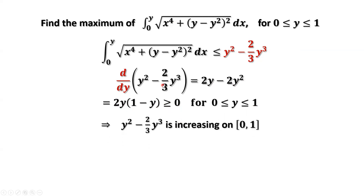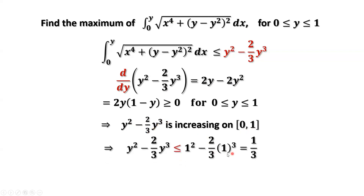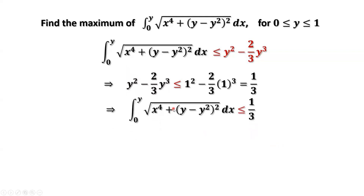What does this mean? The first-order derivative of this function is ≥ 0 on this interval. Therefore, the function y² − (2/3)y³ is increasing on this interval. The maximum value of this function is at the right endpoint, which is y = 1. Substituting y = 1, we get the maximum value: 1 − 2/3 = 1/3. In summary, this integral is less than or equal to 1/3.